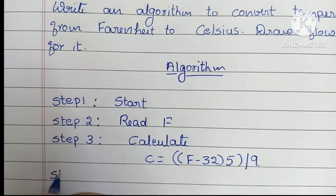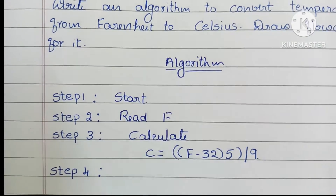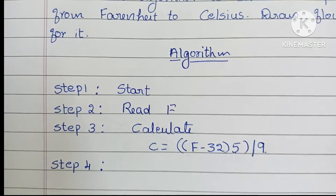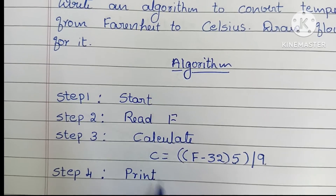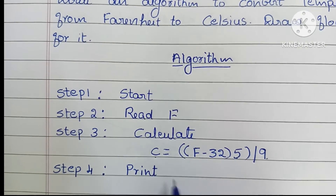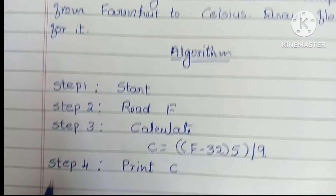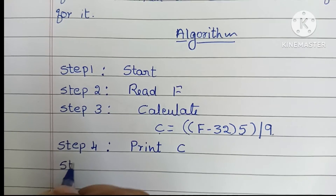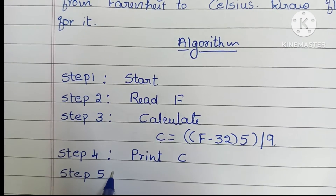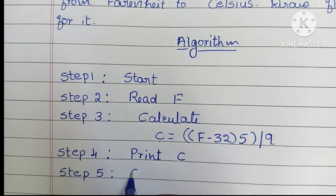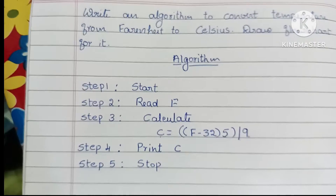Step 4: We have to display the result. Write: Print C, where C is the variable storing the Celsius value. Step 5: We have to stop the process using the stop statement. This is the algorithm to convert Fahrenheit to Celsius.